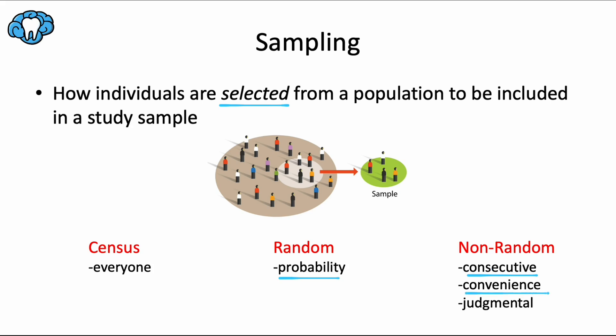A convenience sample is where the study population is chosen from a group that is easy or convenient to reach or access. For example, people who you happen to meet at a dental convention, or students that happen to be in the classroom that day. You ask them to be involved in the study because it's easy. Now this one's not quite as strong as the consecutive sample, and certainly neither of these are as strong as a probability sample.